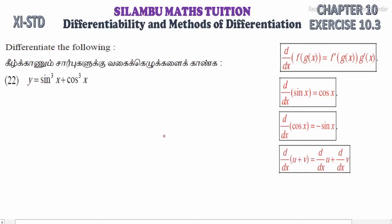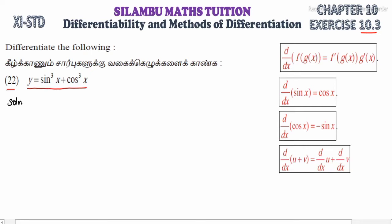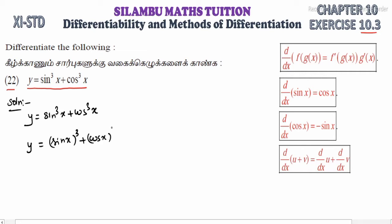Hi student, this is Selambar Max tuition, 11th standard, Exercise 10.3, question number 22 — differentiate the following. The question is: y is equal to sin cube x plus cos cube x. Write it as y = (sin x)³ + (cos x)³.